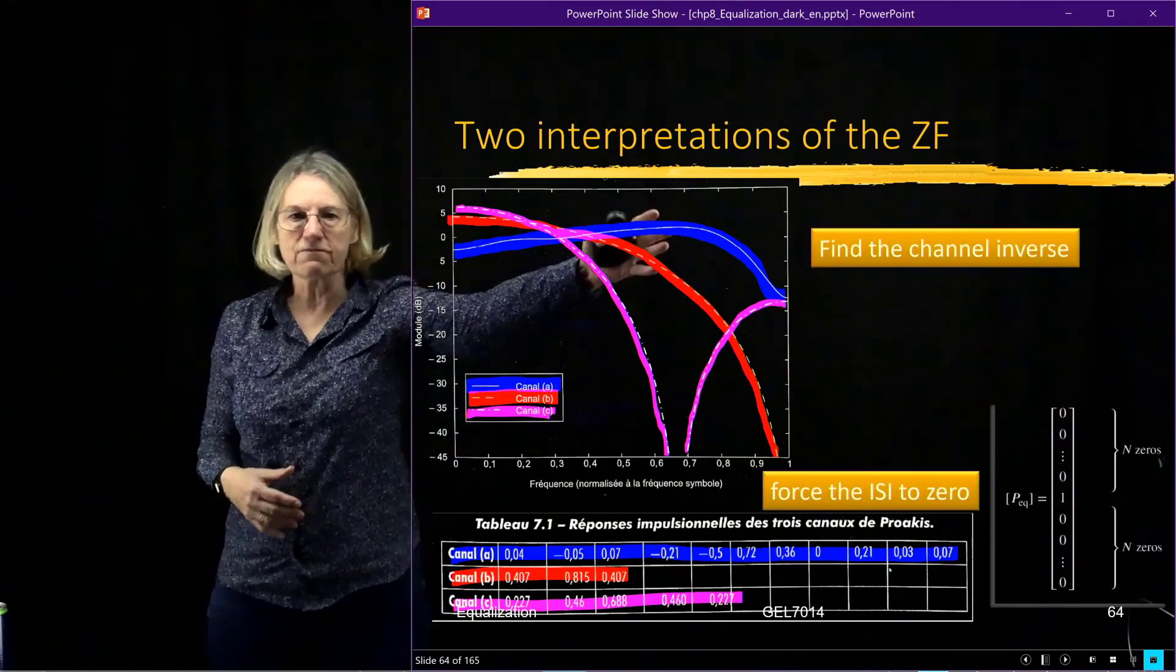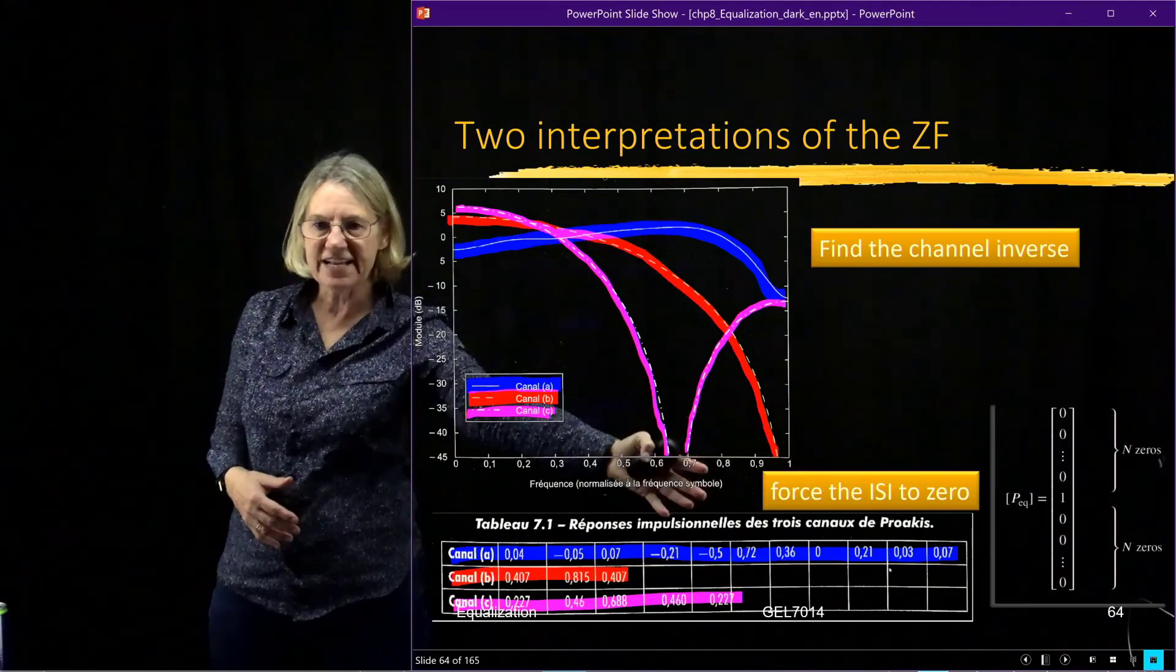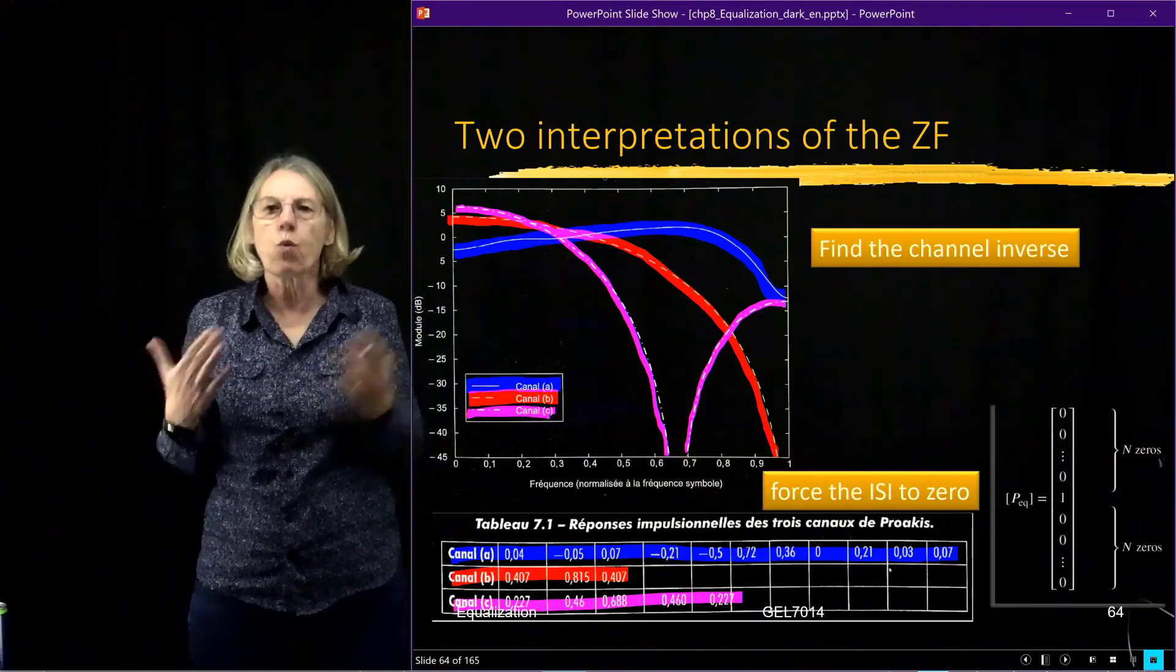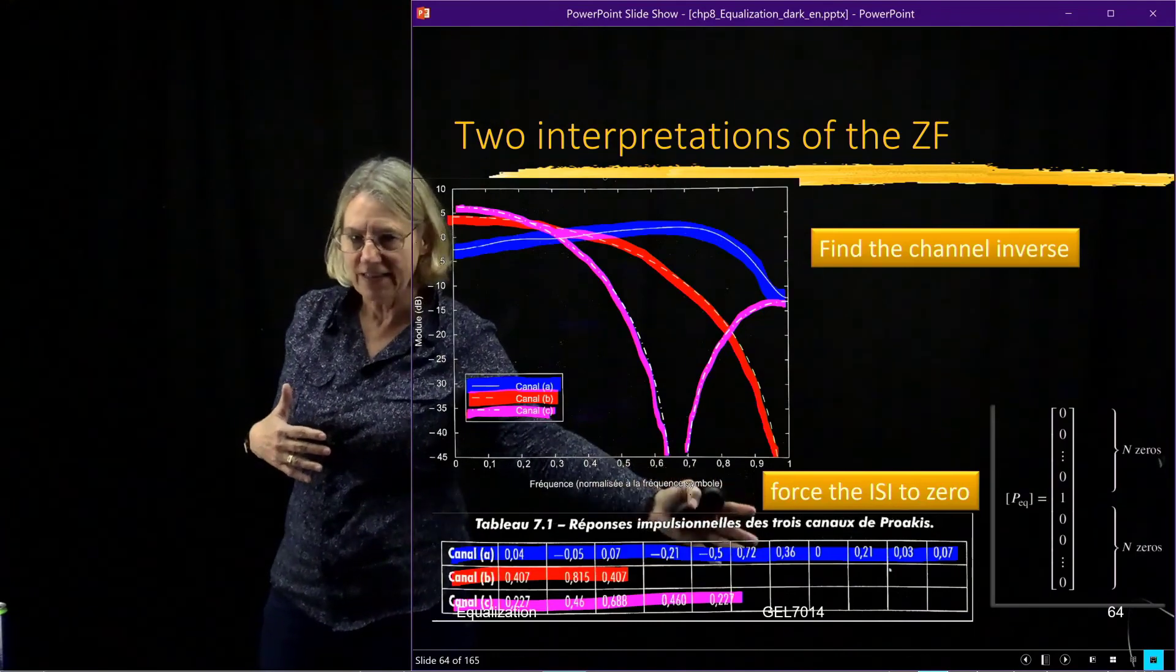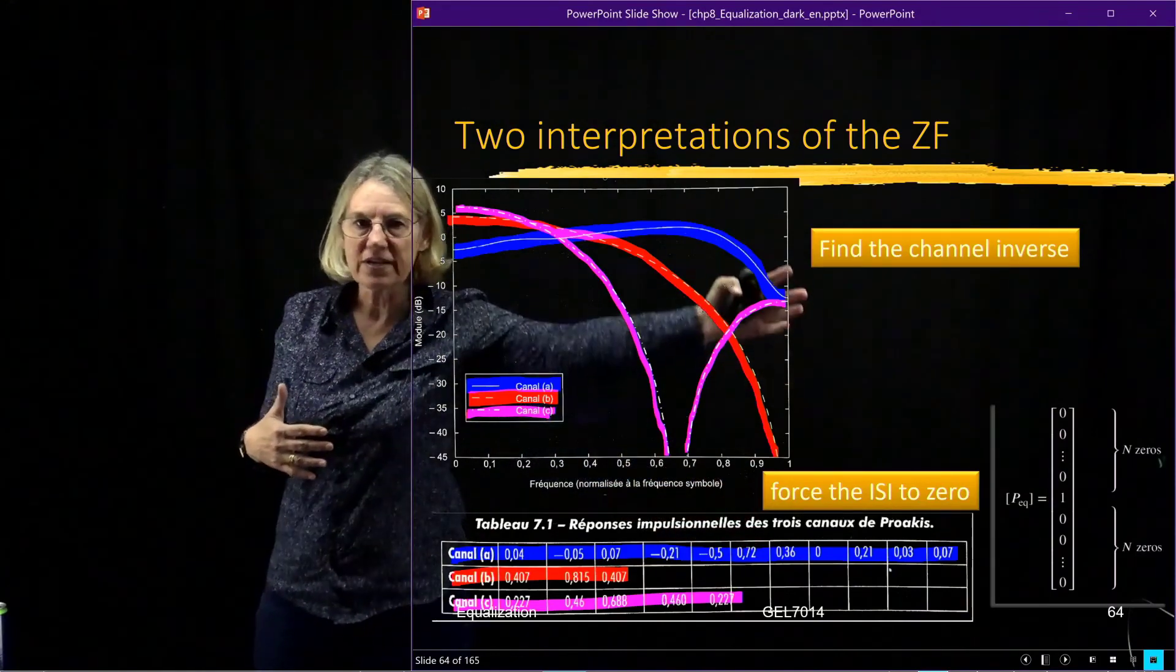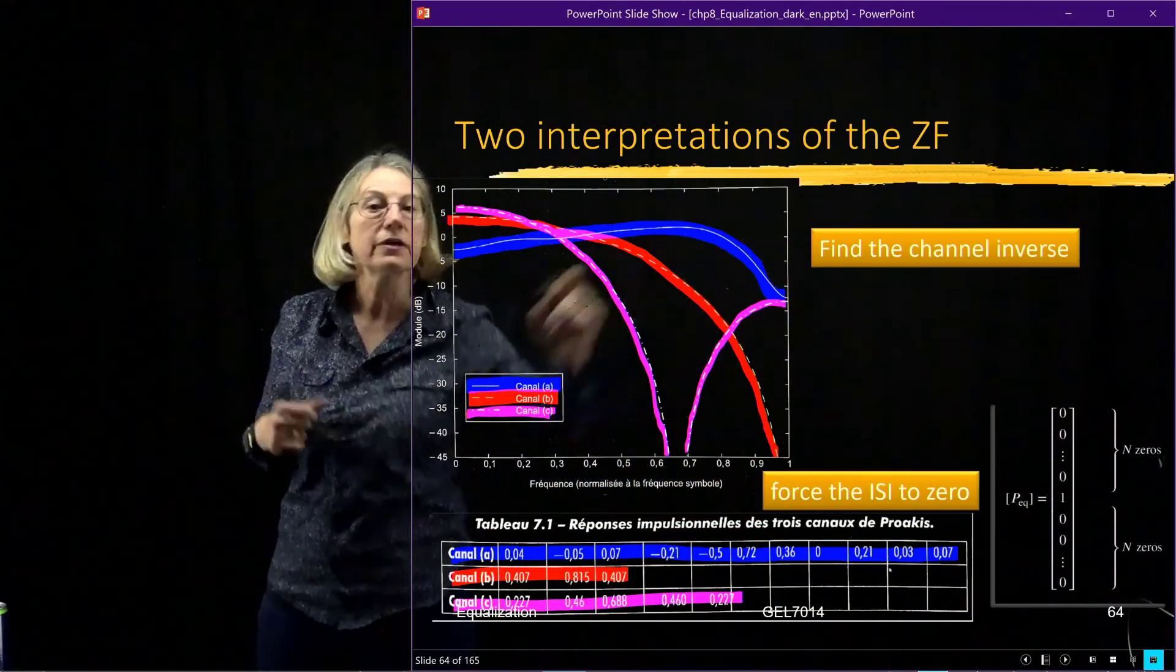So those are our two interpretations of the zero forcing equalizer. Of course the idea of inverting the channel we can see in this illustration.